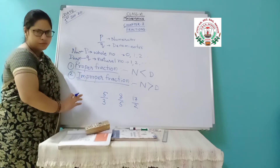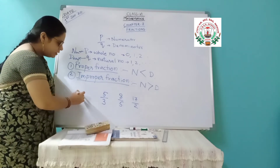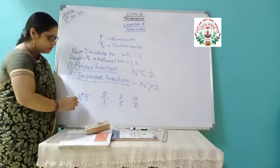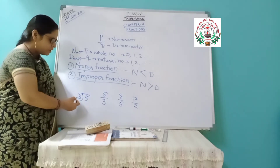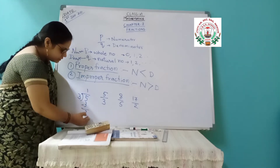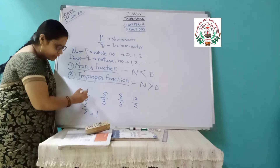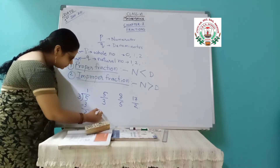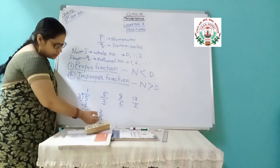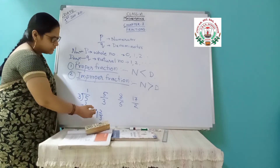Such improper fractions can also be converted into the mixed fraction. How? When you divide the numerator by the denominator — for example 5 by 3 — 3 goes 1 time, remainder 2. It is written as: the quotient 1, then remainder 2 divided by divisor 3. So 1 and 2 by 3. This is the mixed fraction — a whole number part and a proper fraction part.